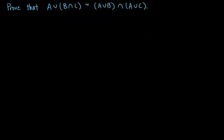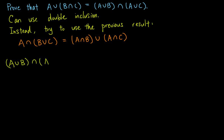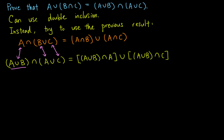Let's prove the other distributivity result. We could use double inclusion just as before, but let's try to prove it using the previous result, which is A intersect the union of B and C equals A intersect B union A intersect C. Here, we have an expression for the intersection of two sets, A and B union C. So let's use it to rewrite the right-hand side of our wanted result by replacing A by A union B, B by A, and C stays the same. By the previous result, we have bracket A union B intersect A union bracket A union B intersect C. Now, we note the property that A union B contains A, so A union B intersect A is just A.